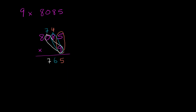And then finally, we have 9 times 8 — the last thing we have to compute. We already know that 9 times 8 is 72, and we just write the 72 right down here, and we're done. 8,085 times 9 is 72,765.